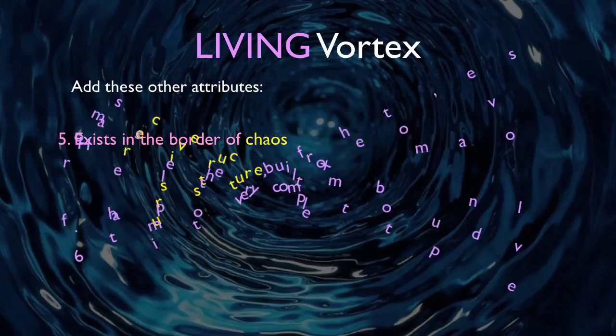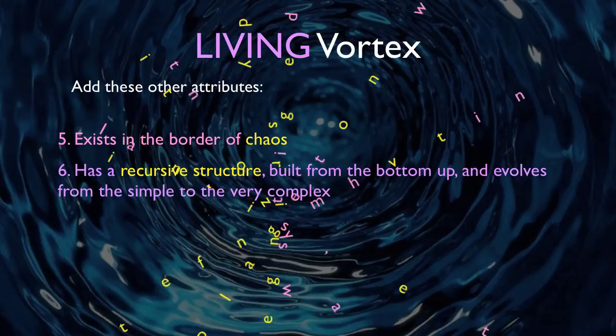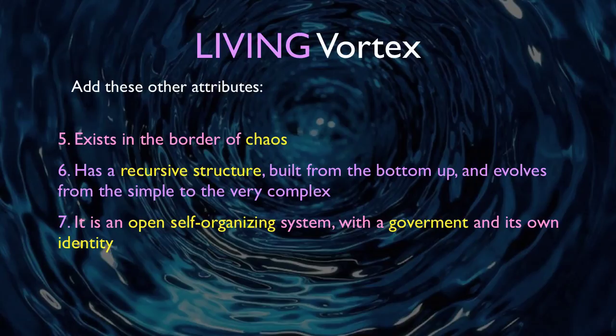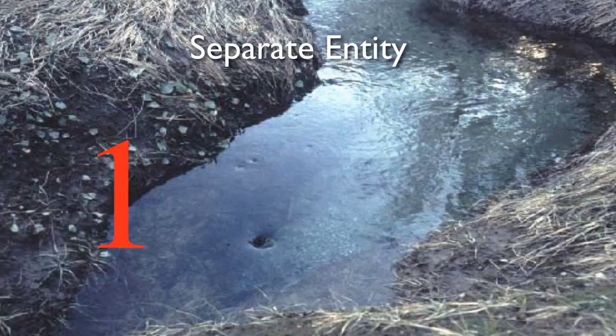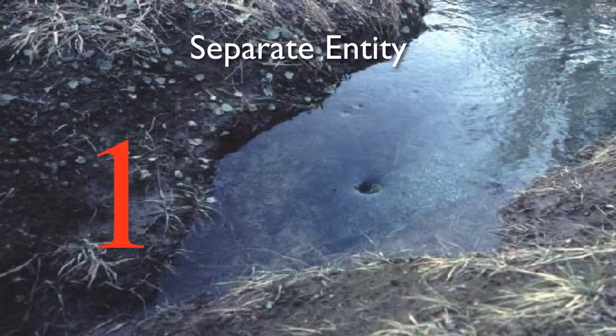We add that it exists in the order of chaos, has a recursive structure built from the bottom up because it evolves from the simple to the very complex, and it is an open self-organizing system with its own government and identity. If we really want to understand, we have no choice but to go deeper into each one of the seven characteristics of vortices. This effort will take the rest of Part 2. I will label each of the seven characteristics of living vortices using big red numbers from one to seven for each characteristic.